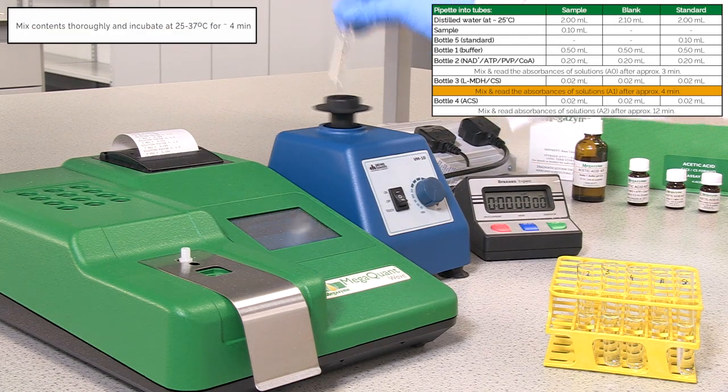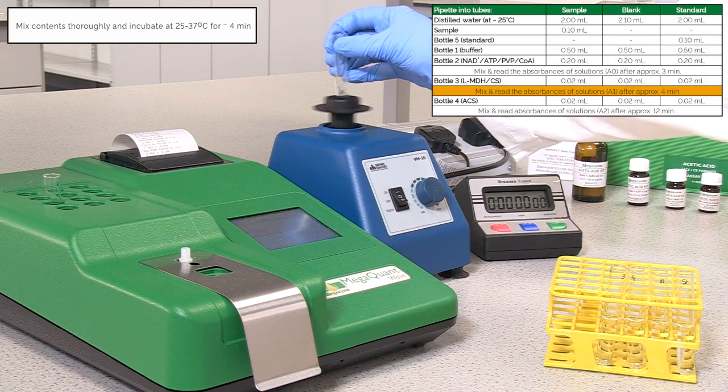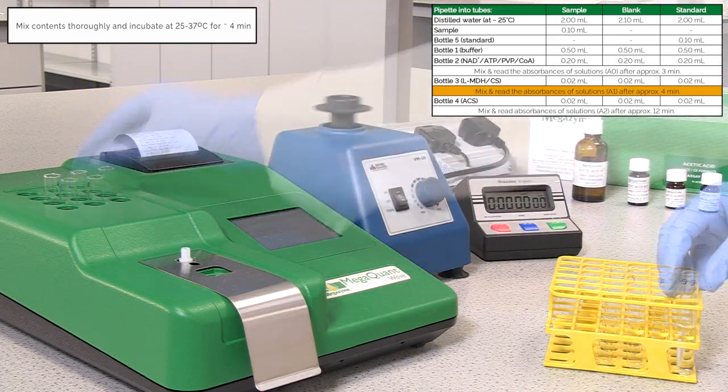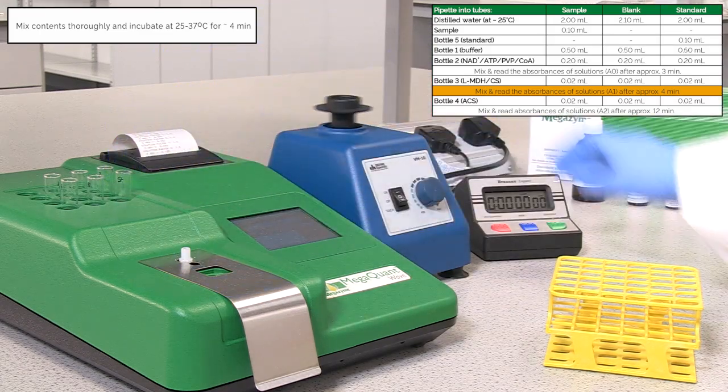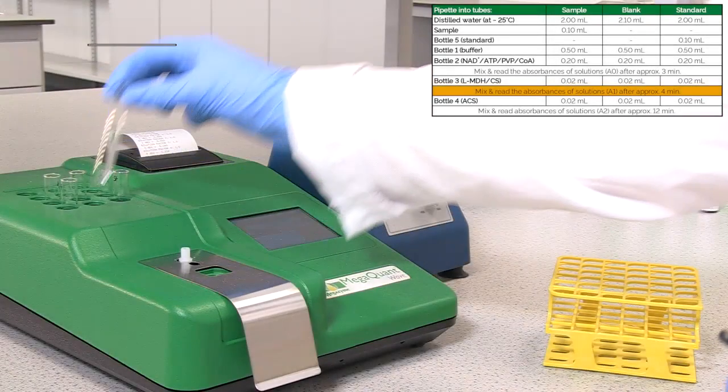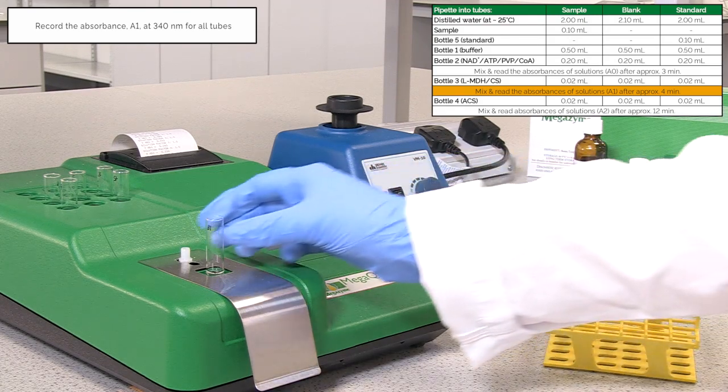Mix the tubes thoroughly and incubate them at between 25 to 37°C for 4 minutes to allow the reaction to go to completion. Record the absorbance reading, A1, for all of the assay tubes.